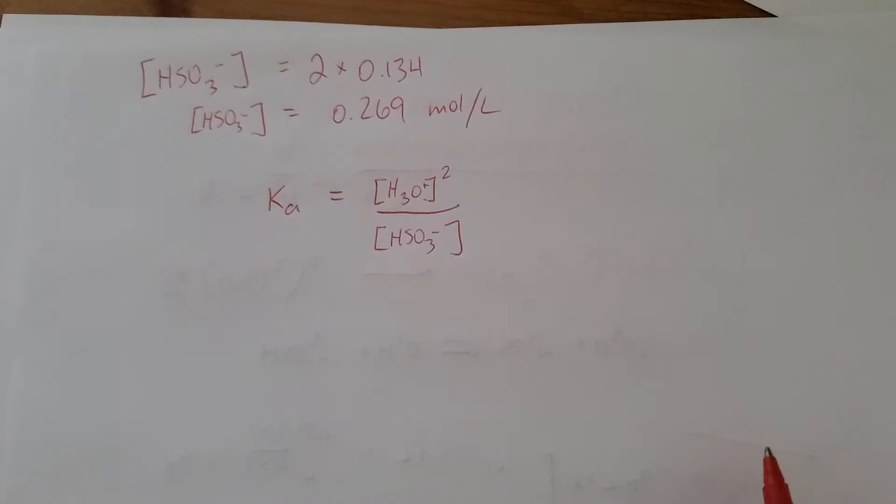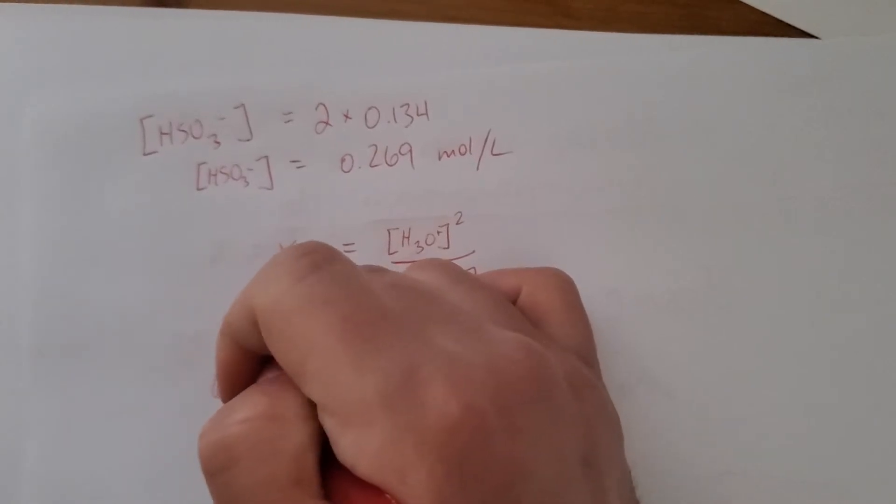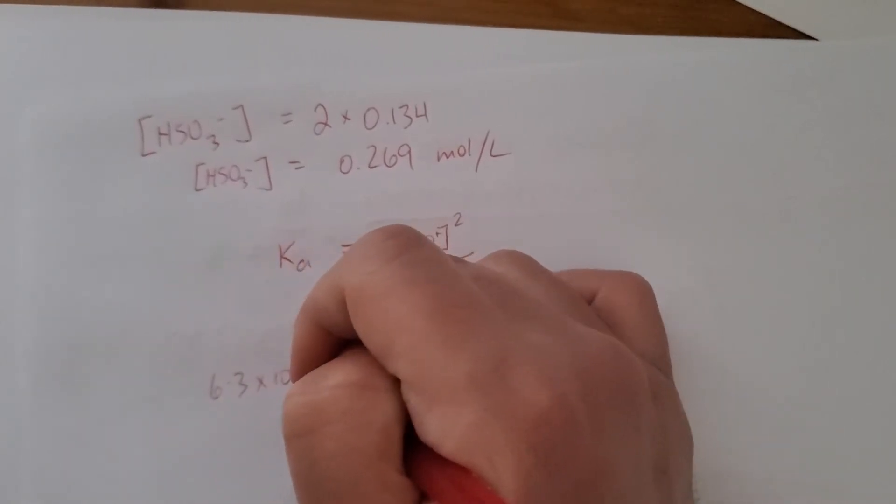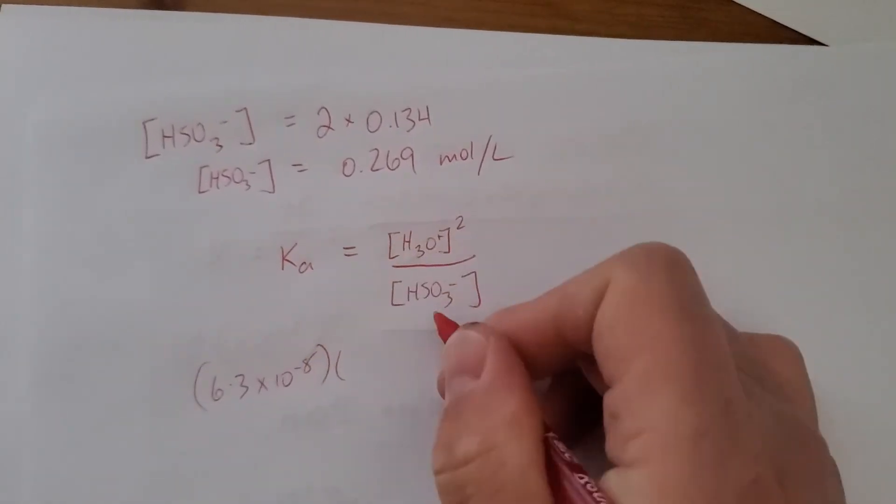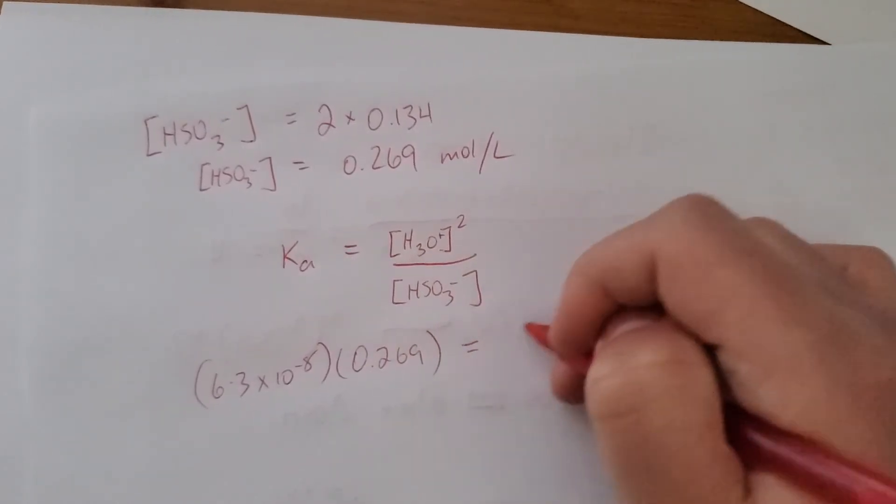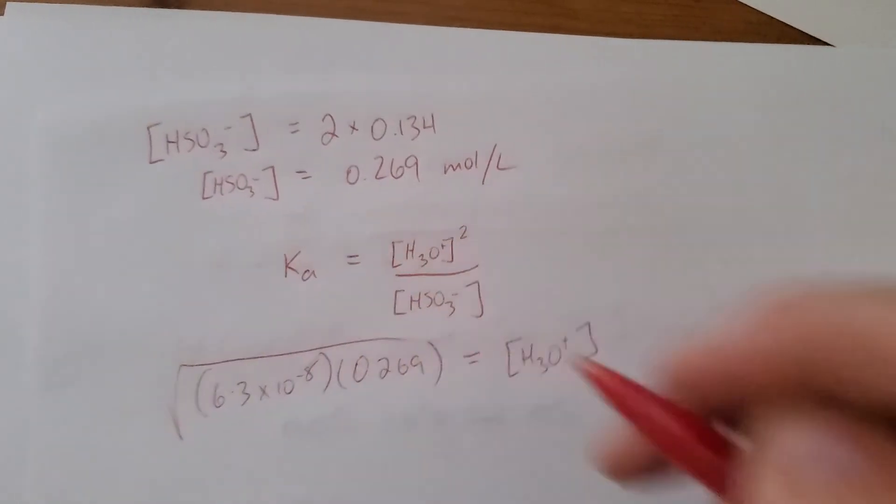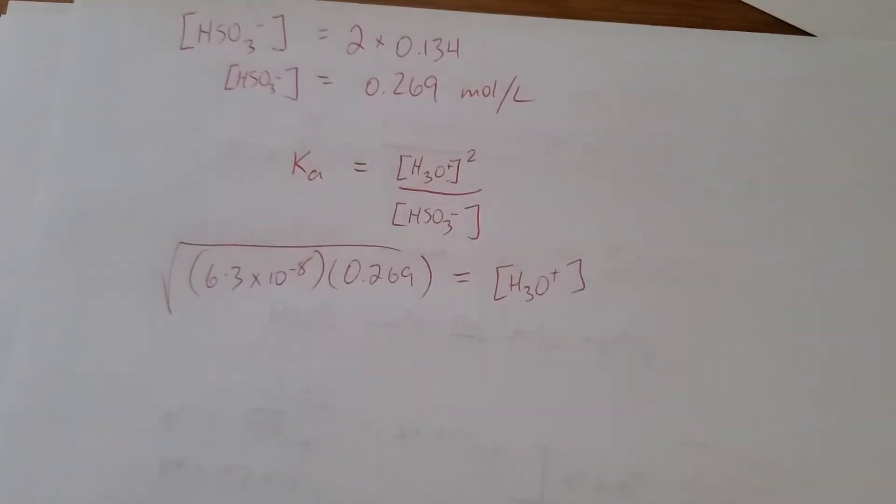All right, Ka I've written over here. It was 6.3 times 10 to the -8, multiplied by what we just got, and take the square root to get our H3O+ concentration. So, I'm going to do that now.